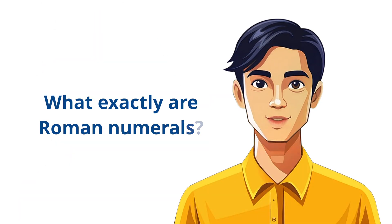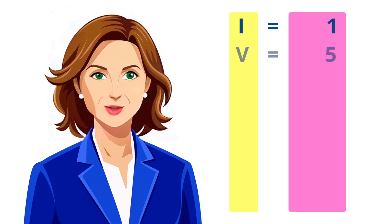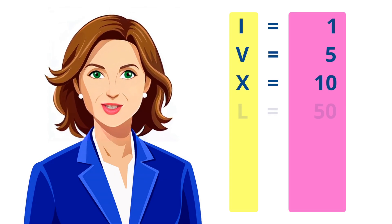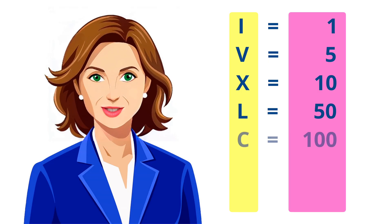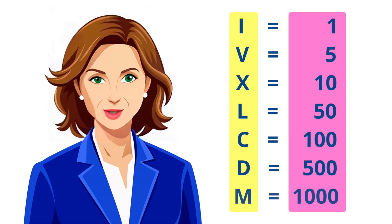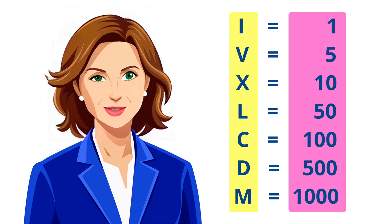What are the main symbols used in Roman numerals? The main symbols and their values are: I equals 1, V equals 5, X equals 10, L equals 50, C equals 100, D equals 500, M equals 1000. By combining these letters in different ways, we can create any number.